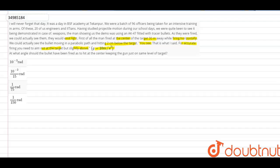G is equal to 10 meter per second squared. At what angle should the bullet have been fired? It has to hit at the center keeping the gun just on the same level of the target. What angle does the range mean?